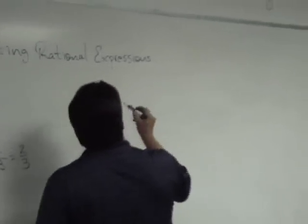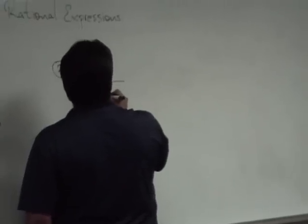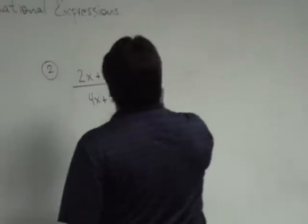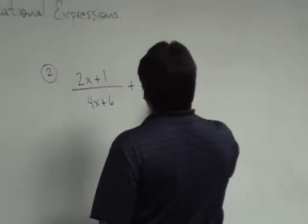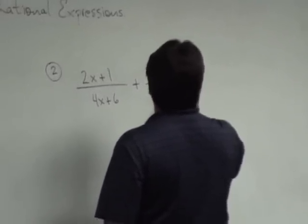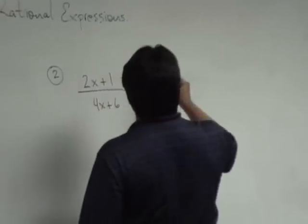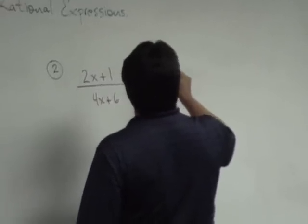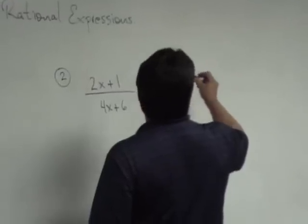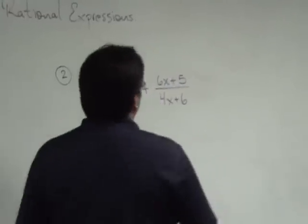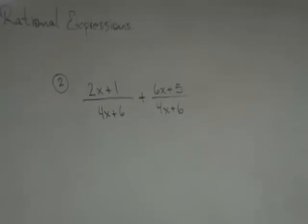We'll start with 2x plus 1 over 4x plus 6. And here I'm going to have 6x plus 5.